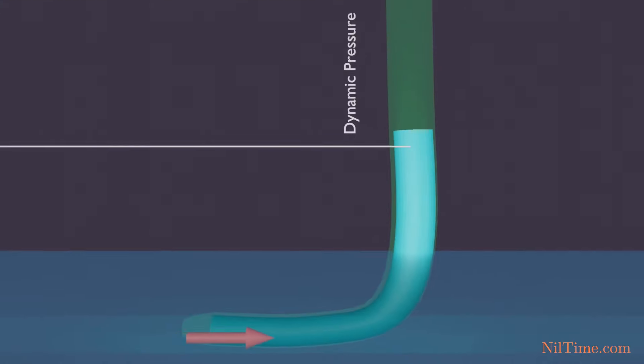When the water particle enters the PETA tube, its velocity will convert to dynamic pressure.